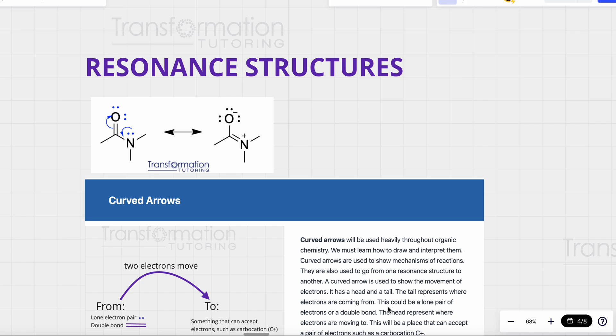Resonance structures are different electronic representations of the same molecule. What it means is that resonance structures are different forms of the same molecule where the only thing that has moved is electrons.